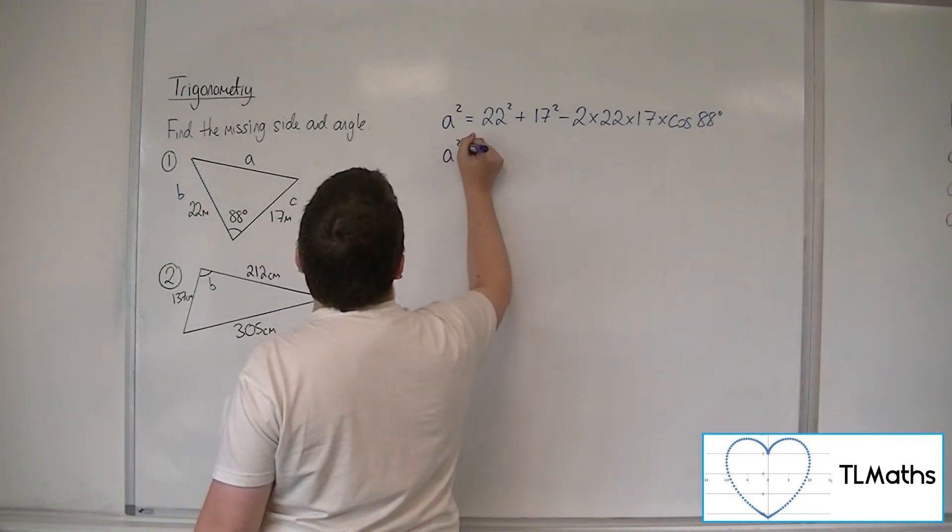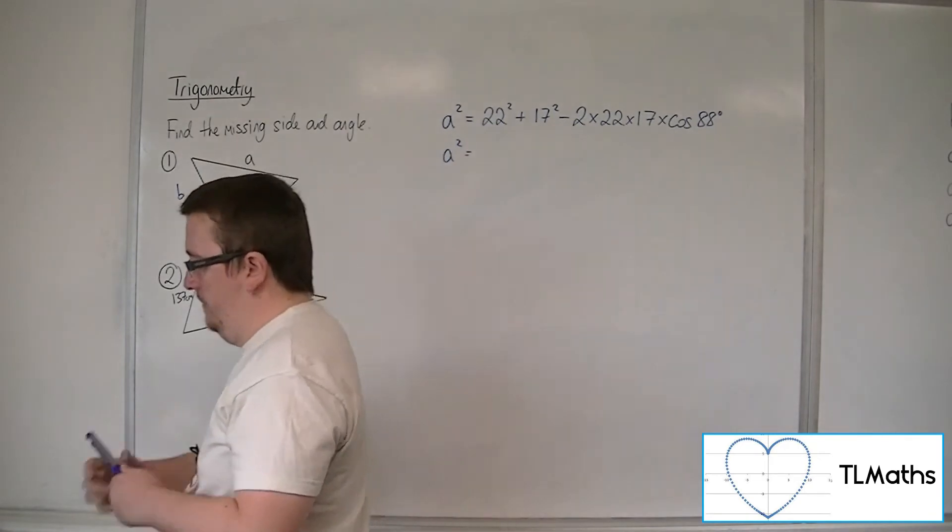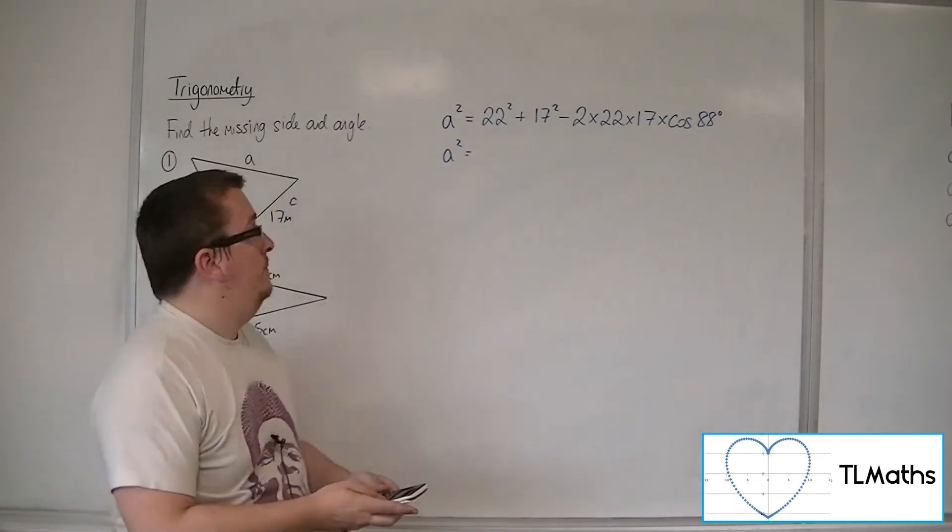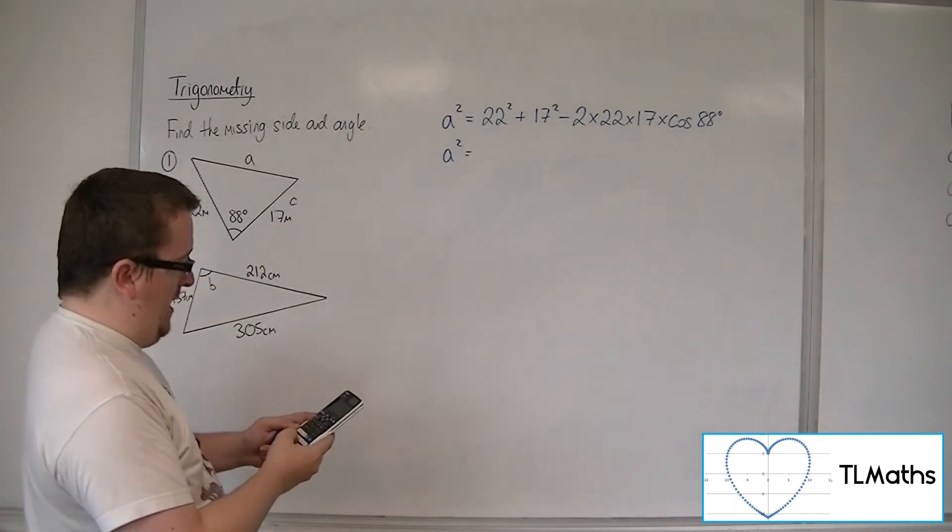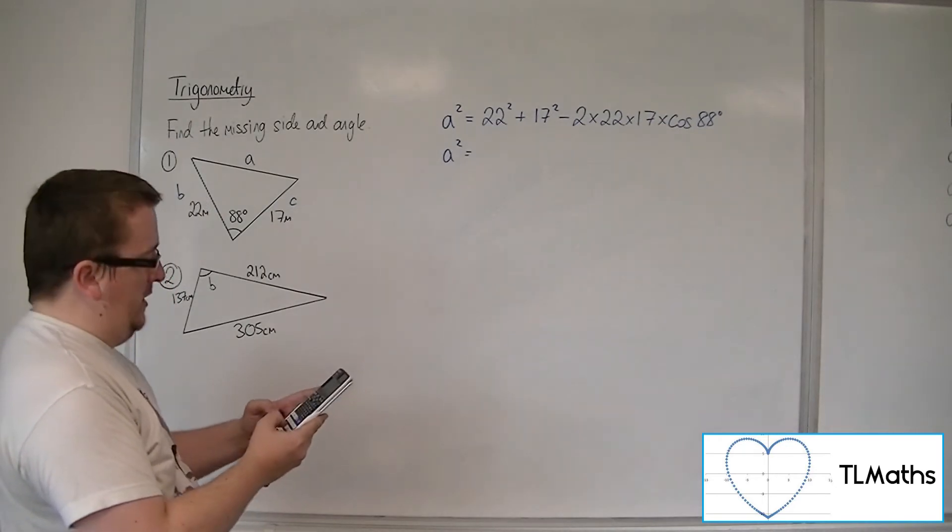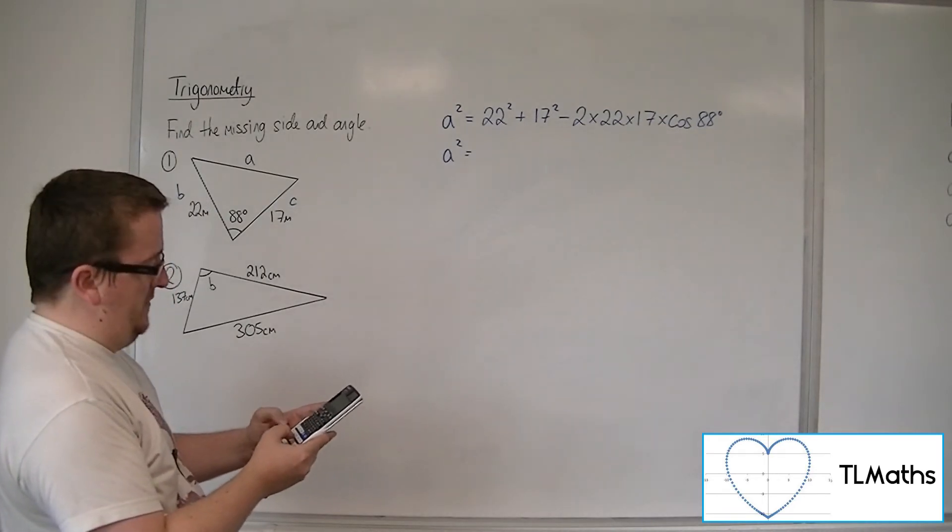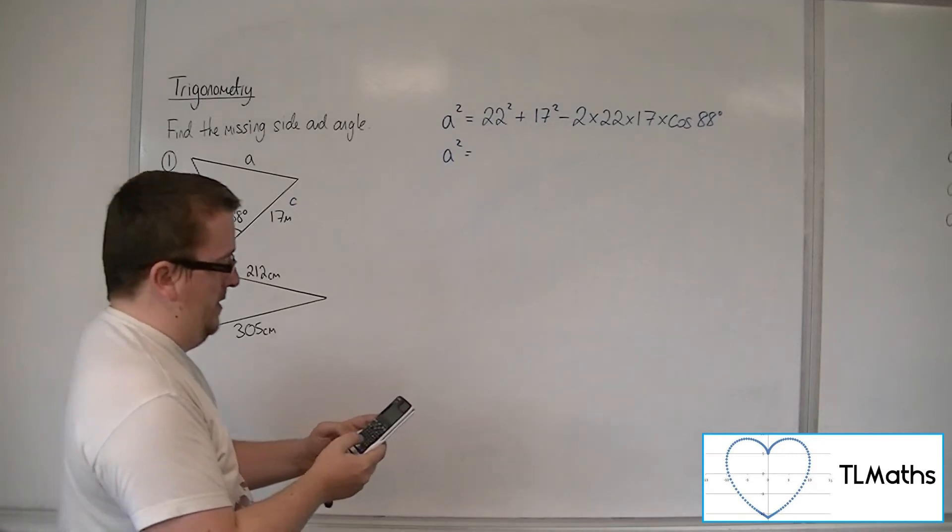So A squared, I can just plug all of that straight into the calculator. So 22 squared plus 17 squared, take away 2 times 22 times 17, times cos of 88.